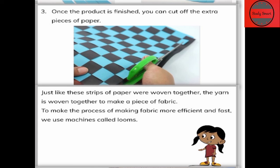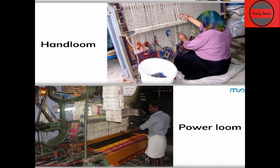Doing this work by hand takes a lot of time, so to make this process efficient and fast we use various types of machines called looms. There are two ways to operate looms: either with the help of hands — this is called a hand loom — or with the help of electricity or a power source — this is called a power loom. So looms are of two types: hand loom and power loom. And our first way to change yarn into fabric is weaving.